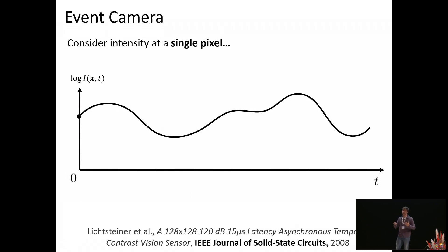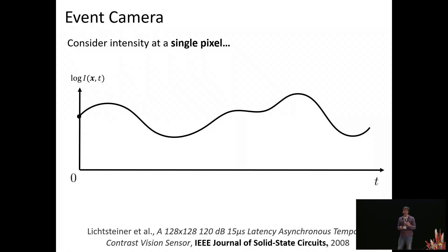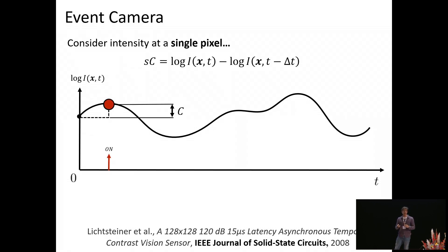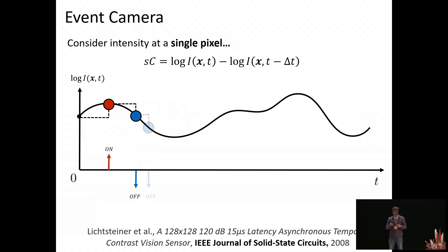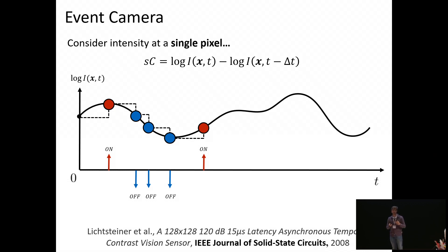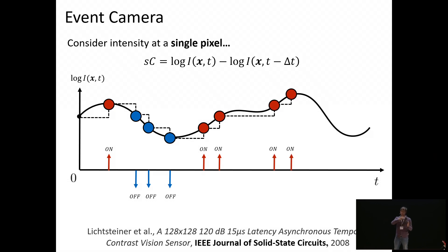Let me explain how an event camera works by considering one individual pixel. Every pixel in an event camera triggers asynchronously and independently. On the bottom plot, you see the log intensity as it changes over time. Every time this intensity changes by a fixed amount C, called the contrast threshold, an event is triggered. As time progresses, more events are triggered, and the different colors represent a positive or negative change in intensity. The event camera converts an analog intensity signal into discrete spikes characterized by their polarity — plus or minus — and their timestamps.